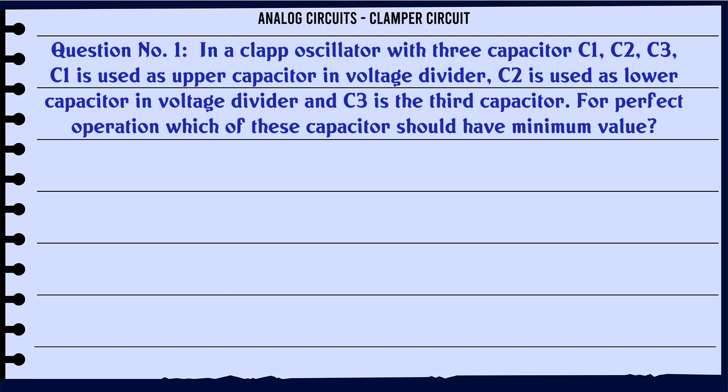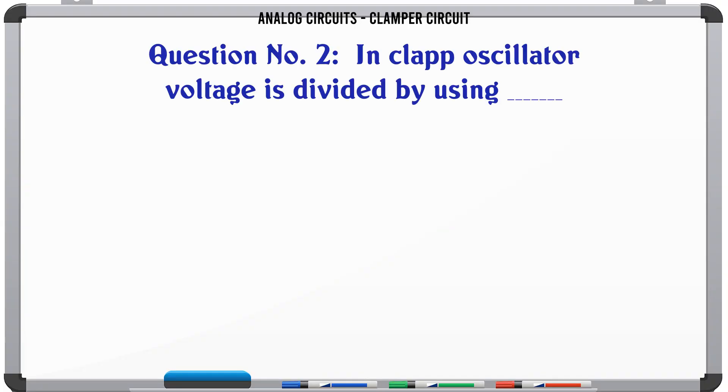In a clap oscillator with three capacitors C1, C2, C3, C1 is used as upper capacitor in voltage divider, C2 is used as lower capacitor in voltage divider, and C3 is the third capacitor. For perfect operation, which of these capacitors should have minimum value? A: C1, B: C2, C: C3, D: All of them are equal. The correct answer is C3.